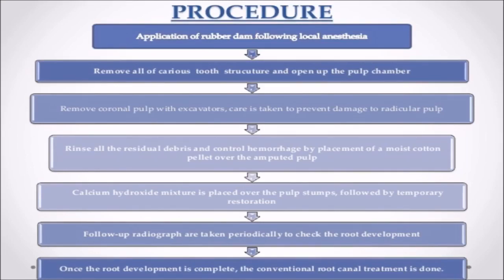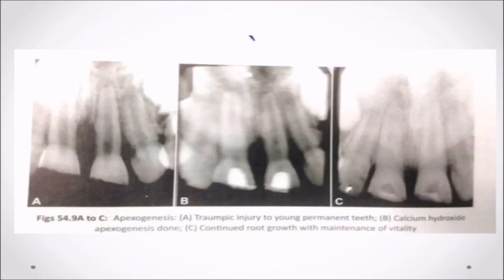Apexogenesis Procedure: Remove all carious tooth structure and open up the pulp chamber. Remove coronal pulp with excavators, taking care to prevent damage to the radicular pulp. Rinse all residual debris and control hemorrhage by placement of a moist cotton pellet over the amputated pulp. Calcium hydroxide mixture is placed over the pulp stumps, followed by temporary restoration. Follow-up radiographs are taken periodically to check root development. Once root development is complete, conventional root canal treatment is performed.